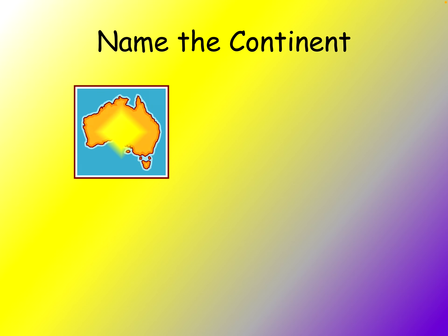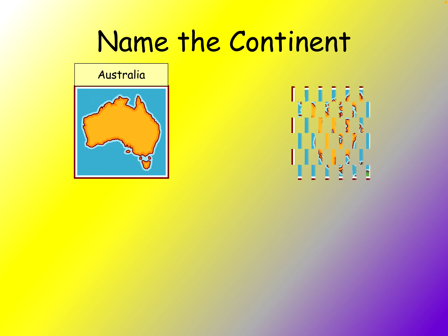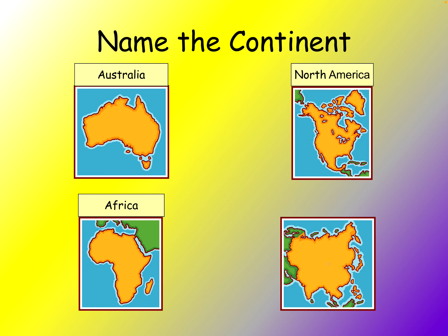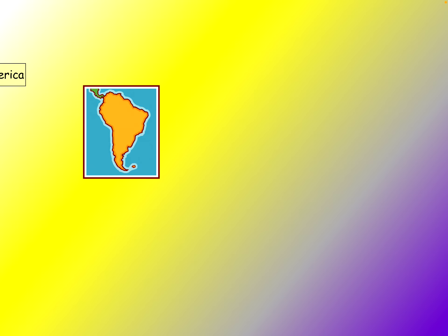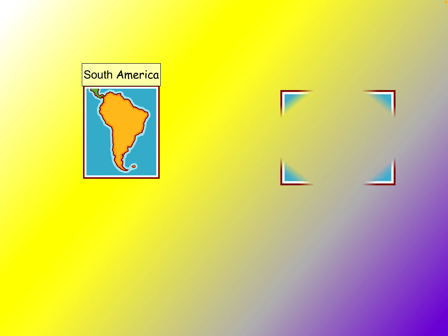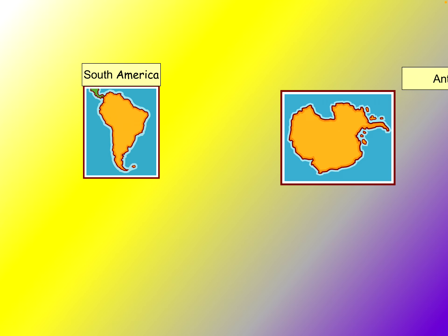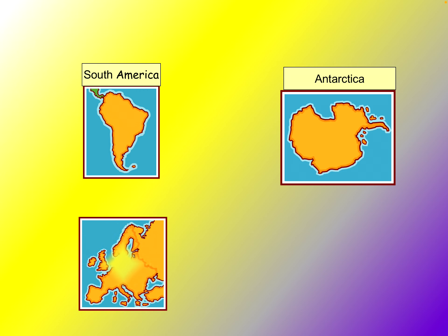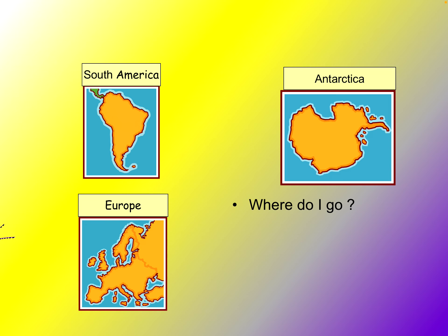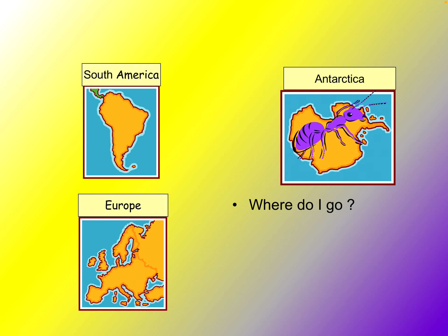Let's name these continents: Australia, North America, Africa — the backwards F. There's the Asian butterfly — Asia. The letter S — South America. Antarctica, with the ant. And Europe, with the Italian boot. You can see the ant going to Antarctica.